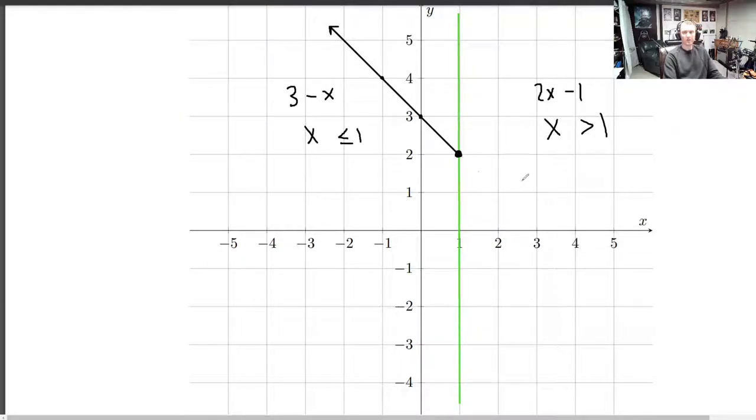I'll graph it in another color. We've got 2x minus 1 if x is bigger than 1. So I'll plot this line. It's a line of slope 2 and a y-intercept of negative 1. So if I plug in 0, I should get negative 1. And I go up 2 over 1, up 2 over 1, just like that. You can make a table of values for that. And then this is the graph of it. It just keeps going over here and it keeps going over here.